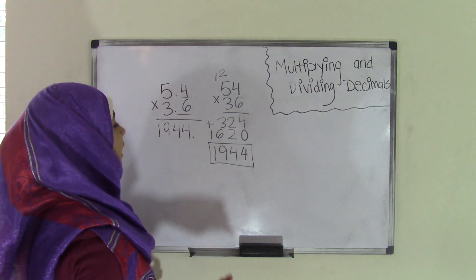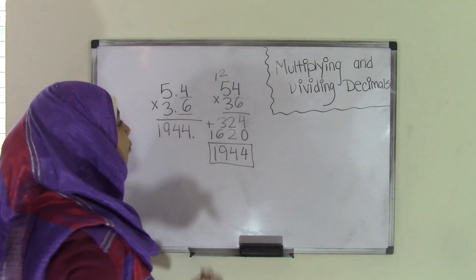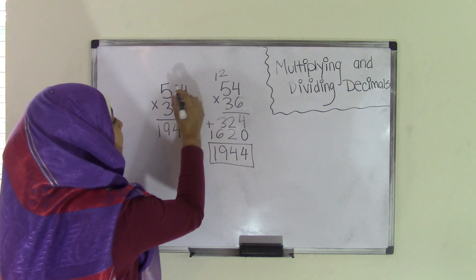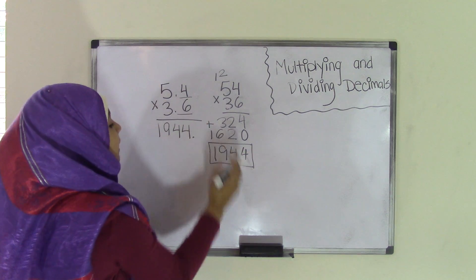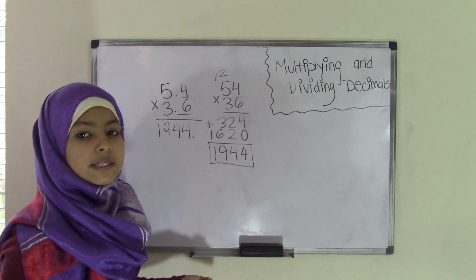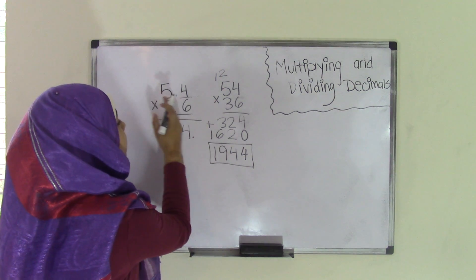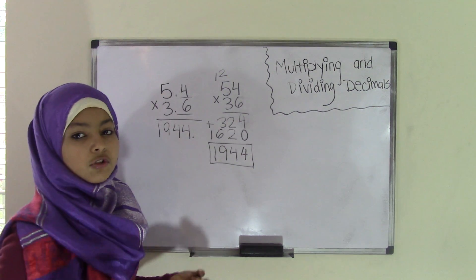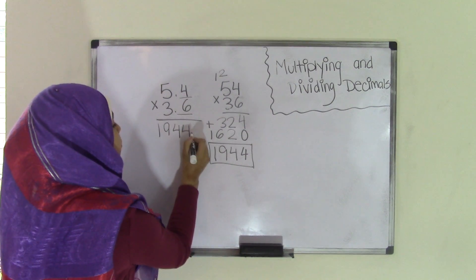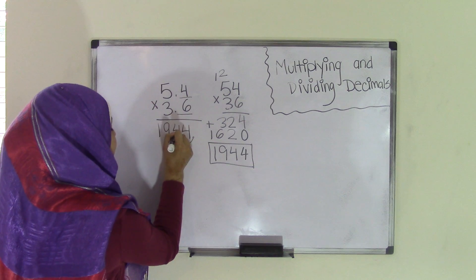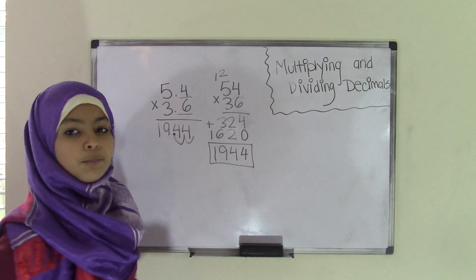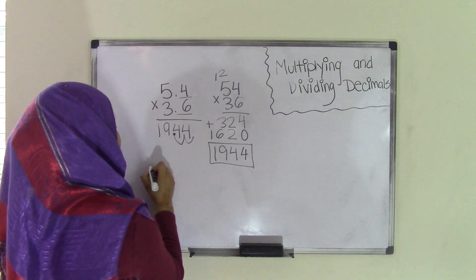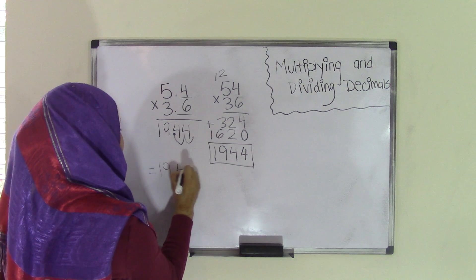Now, why are you moving it right to left? When we multiplied, we had removed our decimal point — we had made our numbers whole numbers by moving them from left to right. Now that we have our product, we have to do the opposite step. We had moved them from left to right to make them into whole numbers; now we move them from right to left to make them back into decimal numbers. So, two places right to left gives us our final product of 19.44, which means 5.4 multiplied by 3.6 equals 19.44.